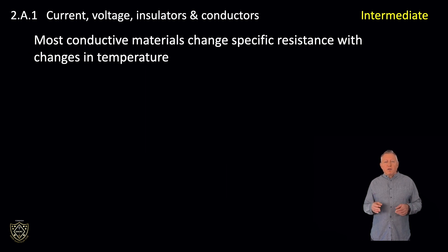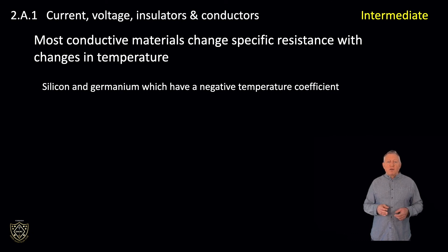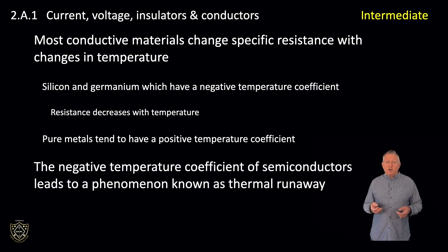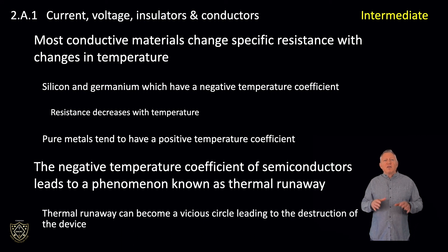Most conductive materials change specific resistance with changes in temperature. This is true for semiconductor materials such as silicon and germanium, which have a negative temperature coefficient, which means that their resistance decreases with temperature. Pure metals tend to have a positive temperature coefficient. Components with a positive temperature coefficient can be usefully combined with components with a negative temperature coefficient to cancel out the effects of temperature changes. The negative temperature coefficient of semiconductors leads to a phenomenon known as thermal runaway, where the current through a device generates heat, thereby reducing the resistance of the device, causing more current to flow, and hence more heat. If unchecked, thermal runaway can become a vicious circle leading to the destruction of the device.